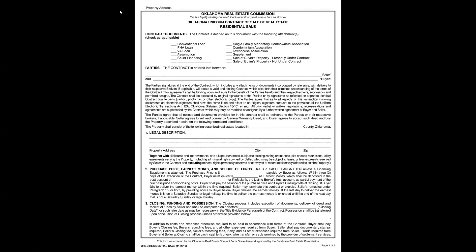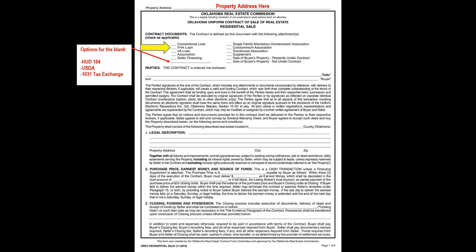On page one of the contract, the property address is always written across the top of each page. The contract is defined as this document, which includes six pages with the following attachments. If the buyer is using conventional, FHA, VA, or seller financing, you attach the appropriate finance supplement. There is also a blank field to write in items like a HUD 184 (Native American loan), USDA financing, or a 1031 tax exchange.